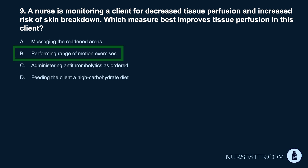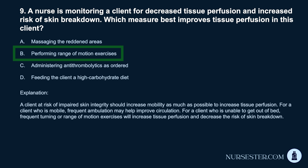Correct answer: B. Performing range of motion exercises. A client at risk of impaired skin integrity should increase mobility as much as possible to increase tissue perfusion. For a client who is mobile, frequent ambulation may help improve circulation. For a client who is unable to get out of bed, frequent turning or range of motion exercises will increase tissue perfusion and decrease the risk of skin breakdown.